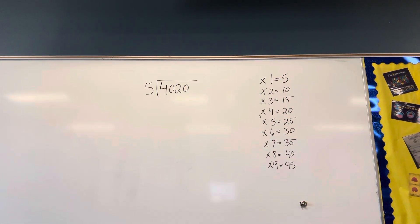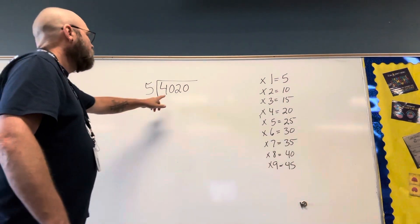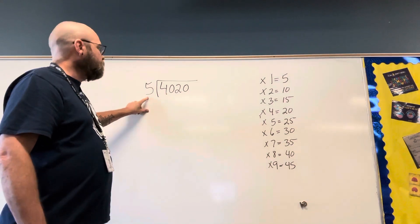All right, the fourth problem. We have 4,020 is our dividend, 5 is our divisor.